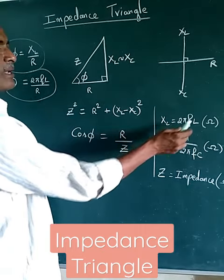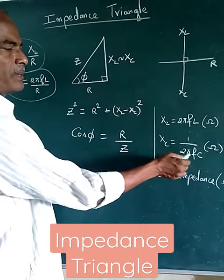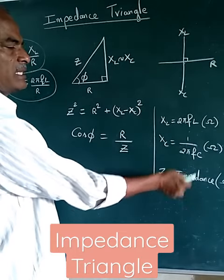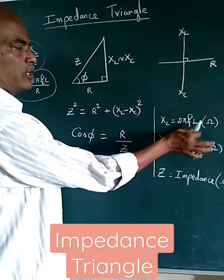XL is equal to 2πFL. XE is equal to 1/(2πFC). And Z is the impedance. All three will have the same unit, Ohms.